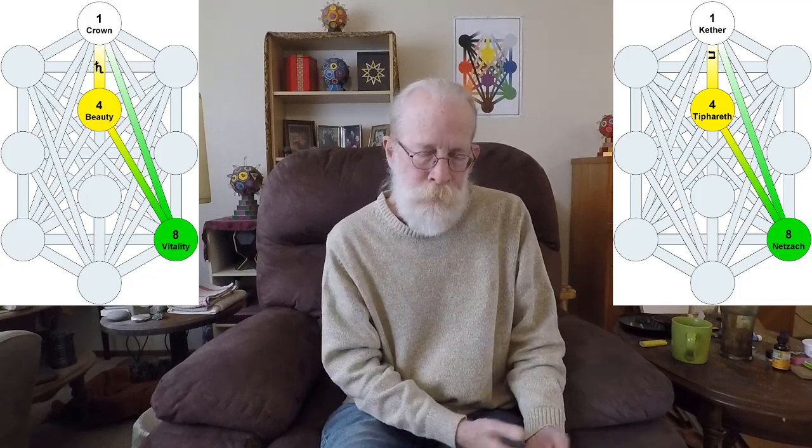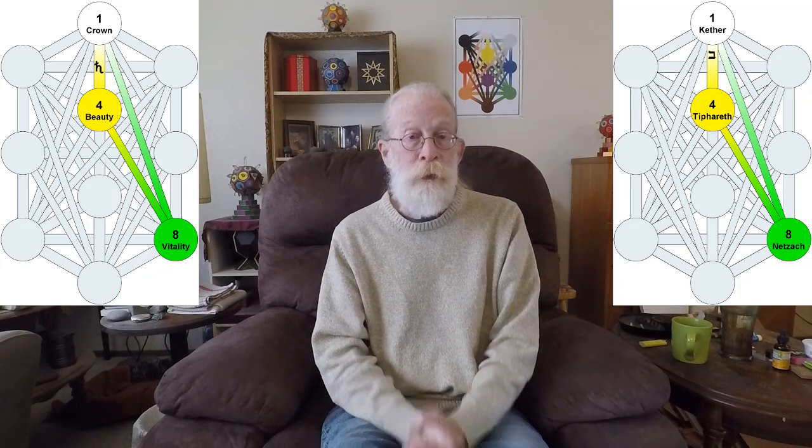Those are the three gates today. The next gates will involve the path of Kaf and Venus, from Gedjula to Netzach.